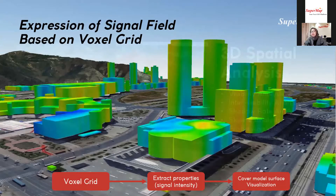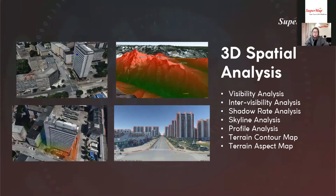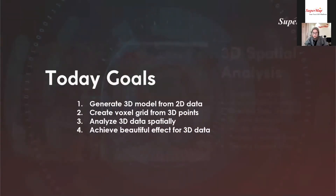SuperMap's ability to do 3D analysis is unquestionable. Some of our spatial analysis features include visibility analysis, inter-visibility analysis, shadow analysis, skyline profile, terrain contour map, and terrain aspect map. After this, I will show you a live demonstration of how to achieve this 3D spatial analysis using SuperMap iDesktop.NET. The goals are: generate a 3D model from 3D data, create a voxel grid from 3D points, analyze 3D data spatially, and achieve a beautiful effect for the 3D data.